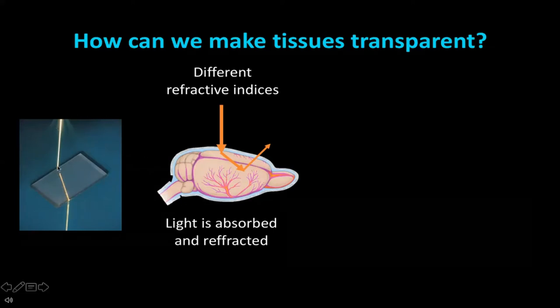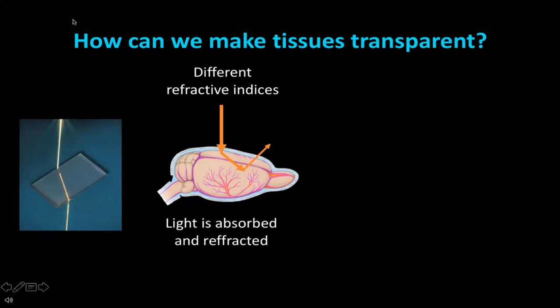When light travels through different kinds of materials, it will change direction—for example, when a light beam first travels through air, it changes direction when it enters and exits a gel. This same thing is happening in our tissues, because of differences in refractive indices. Light is both absorbed and refracted, particularly when moving through an aqueous solution—inside or outside cells—and through a cell membrane with high lipid content.